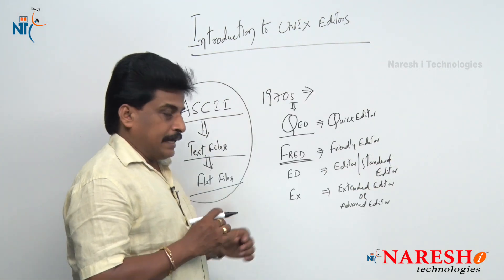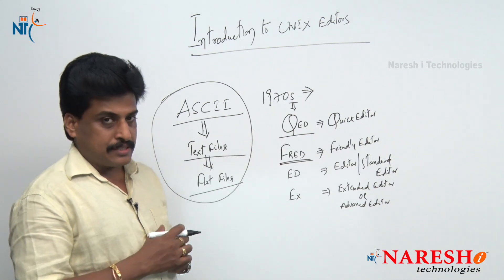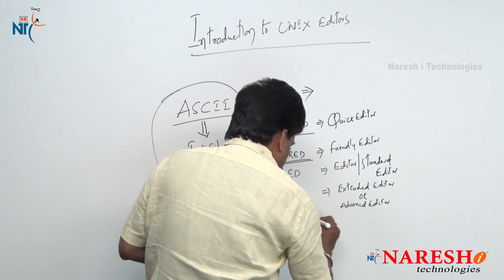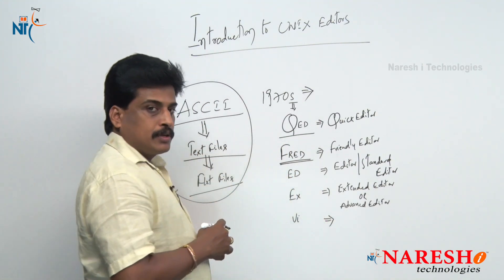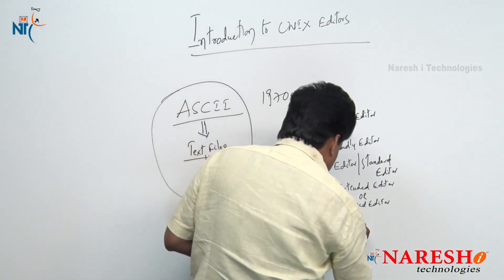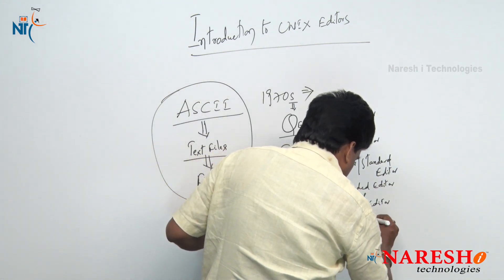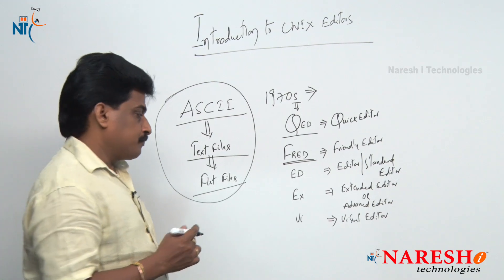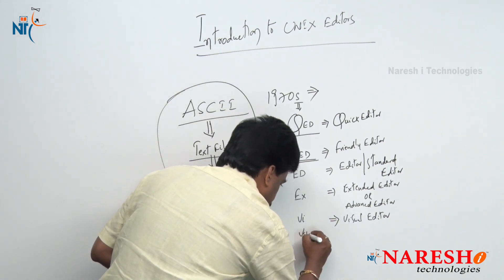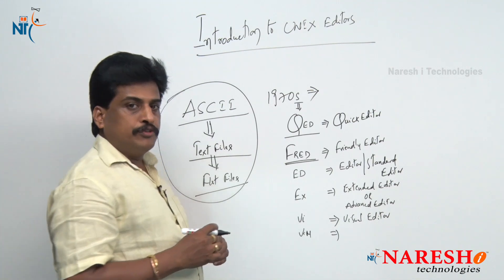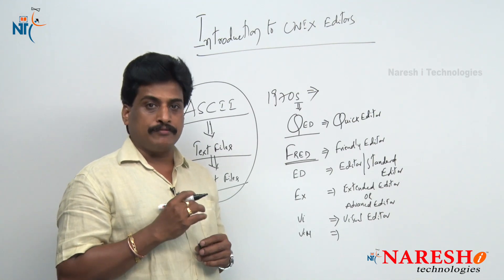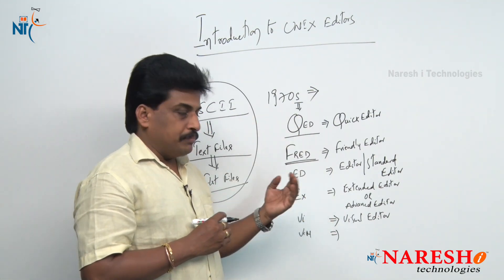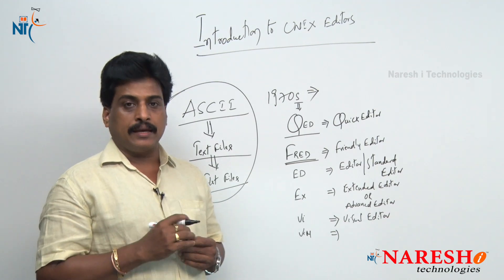EX is a line editor. Later, from EX, VI was implemented — Visual Editor for Unix. Later, in Linux, VIM was released — Visually Improved for Linux. Like this, editors have a big history in Unix and Linux environments.